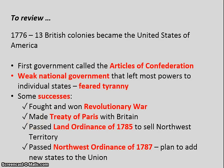To review from Lesson 11: 1776 saw the 13 British colonies break away, become independent, and declare themselves the United States of America. They established the first government of that country called the Articles of Confederation — a weak national government that left most powers to the individual states. Because having just left Britain and broken away from what they considered a tyrannical British government, the last thing they wanted was to establish a tyranny here at home.